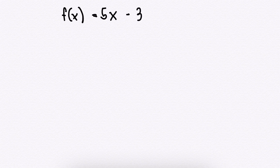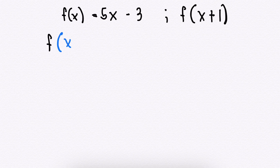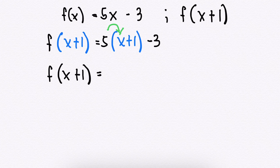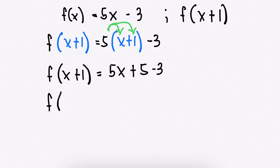Let's try an algebraic expression. We have the same function f(x) = 5x − 3. Evaluate f(x + 1). Again, replace every x with (x + 1). So f(x + 1) = 5(x + 1) − 3. Apply the distributive property: f(x + 1) = 5x + 5 − 3. Then combine similar terms. We have f(x + 1) = 5x + 2.